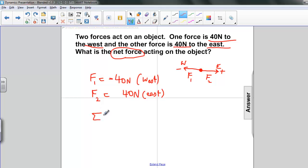So what is the net force? It's probably pretty obvious to you. It is F1 plus F2. And if we add these, do the substitution, we've got minus 40 newtons plus 40 newtons. And the answer is 0.